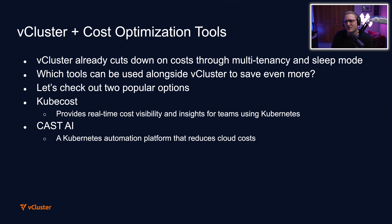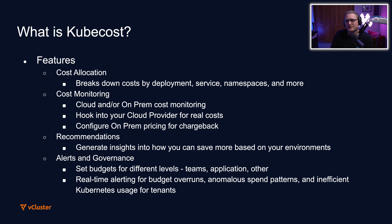KubeCost provides real-time cost visibility and insights for teams using Kubernetes, and CastAI is a Kubernetes automation platform that reduces cloud costs. Some of the features of KubeCost are cost allocation, which breaks down costs by deployment, services, namespaces, and more — so most Kubernetes resources you're used to, you can figure out how much they're going to cost and how much you can charge for them. Along with cost allocation, we can do cloud and/or on-prem cost monitoring, hook into your cloud provider for real costs, and configure on-prem pricing for chargeback — for example, for EKS or GKE.